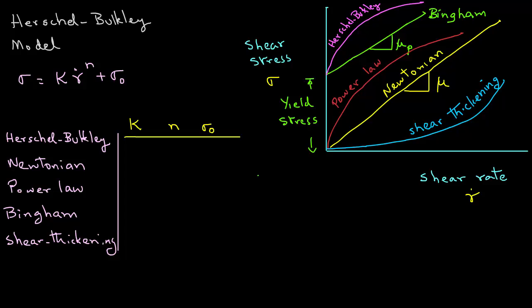then for Herschel-Berkeley liquids, the value of k will be greater than zero, the value of flow behavior index will be between zero and some large number, and sigma zero will be greater than zero, because you need a certain amount of yield stress for the liquid to flow.